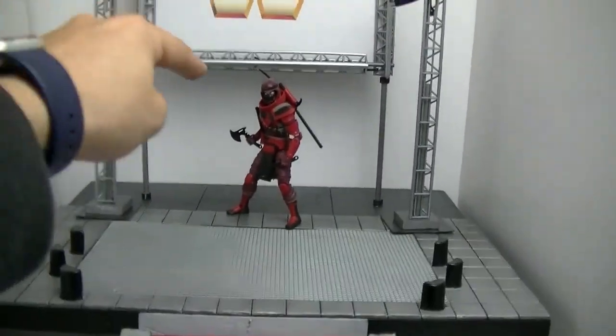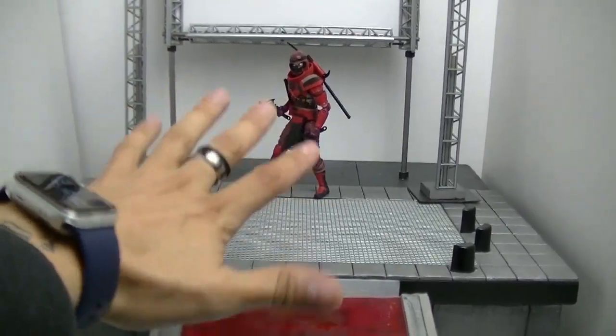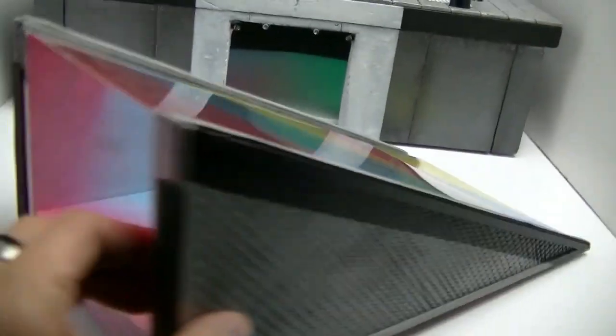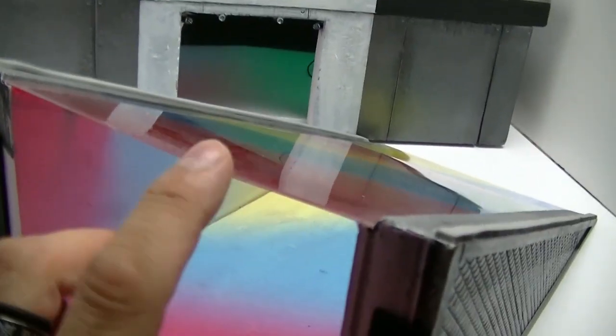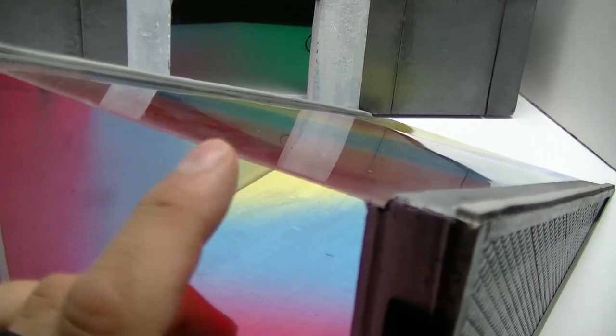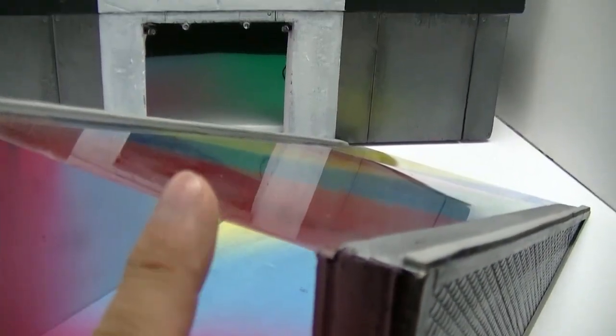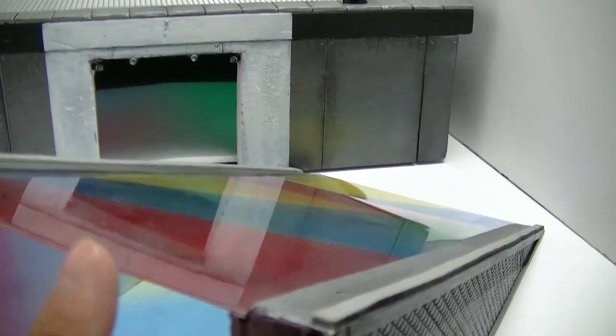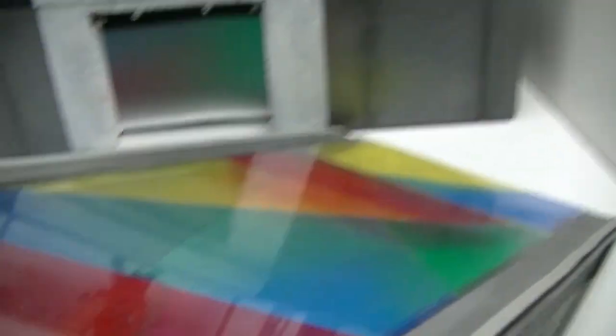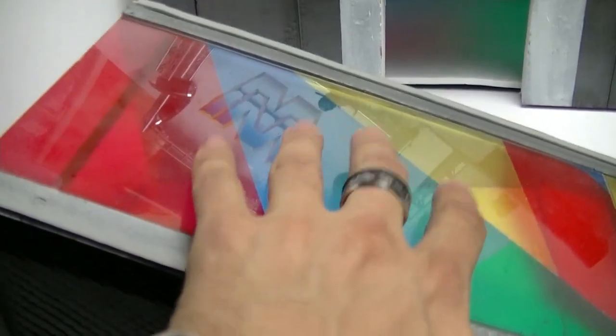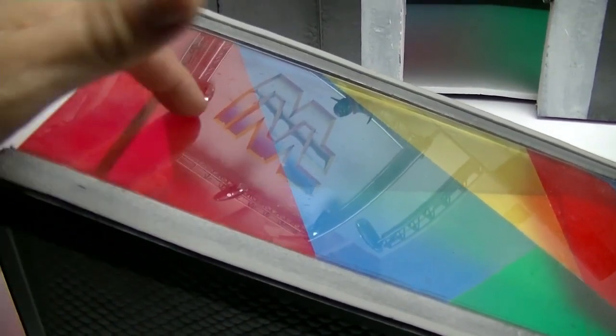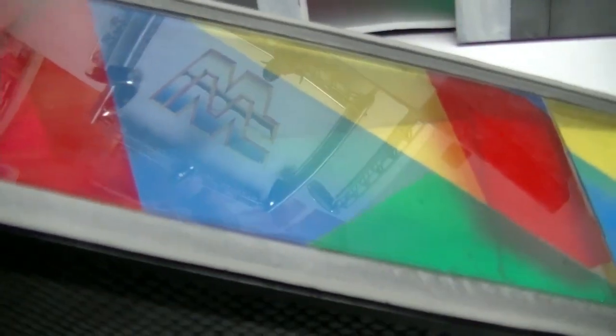He wanted a ramp. I found some plexiglass at Hobby Lobby - it is for model trains. I got some translucent paper there as well in the train model section. On the other side I put some adhesive glue and put these papers in an order that in my mind looked kind of cool, then painted everything white.